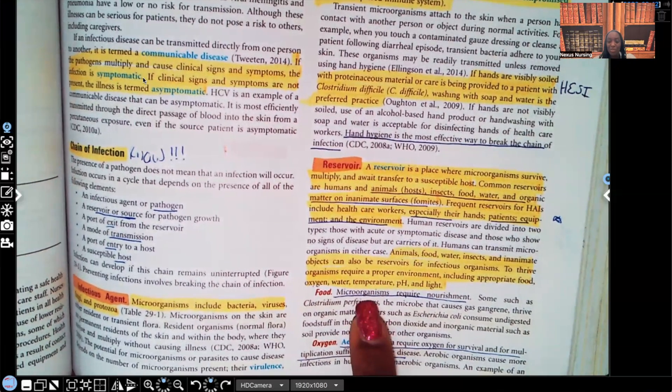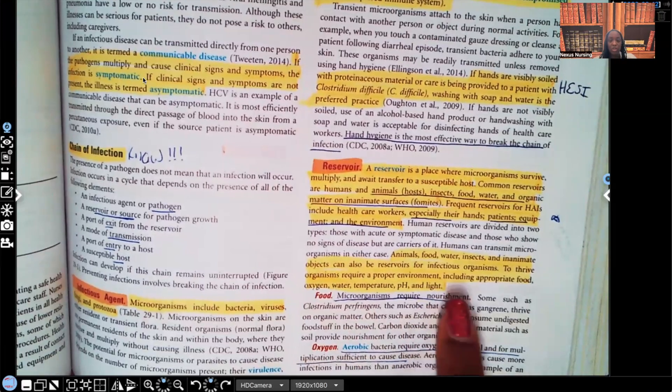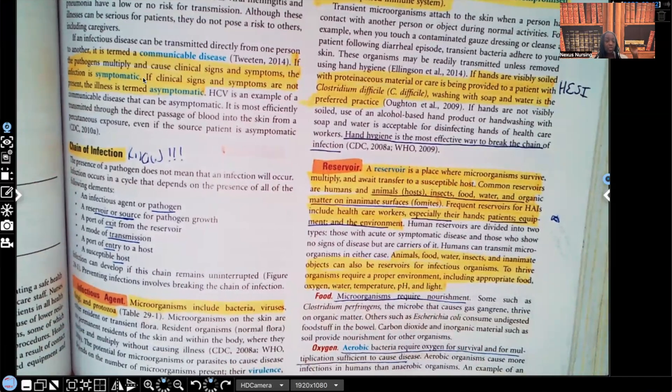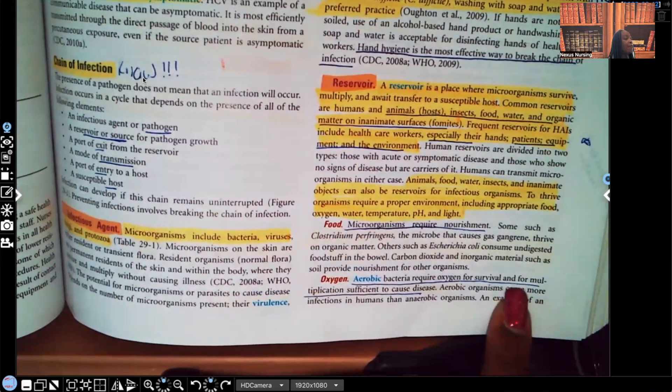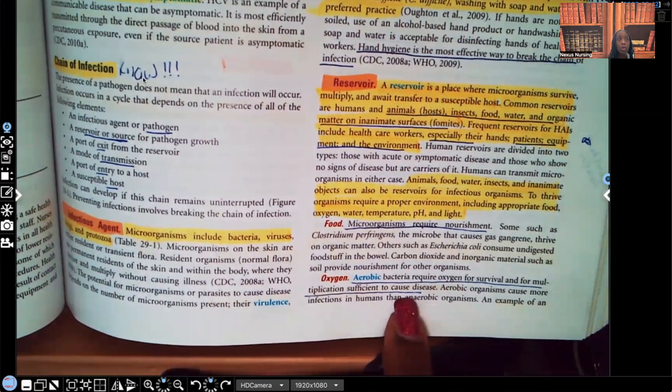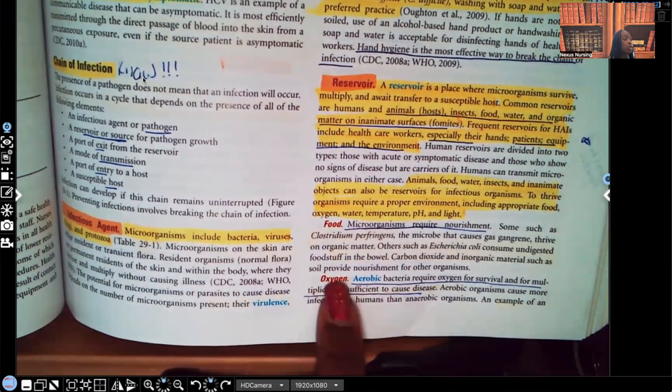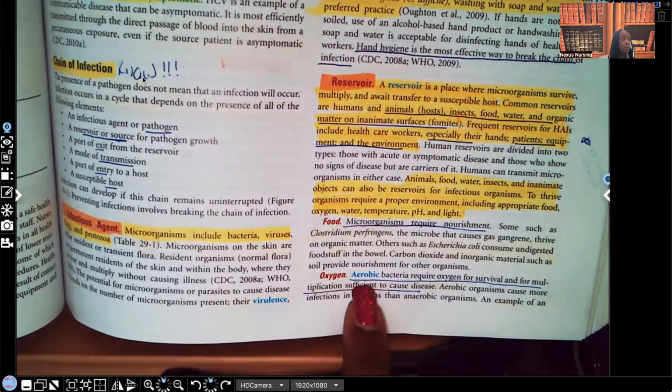Microorganisms need nourishment. I'm not going to read the rest of this. This is the most important thing you need to know. They need nourishment in order to survive. Oxygen. Now there's aerobic and anaerobic. Let's start with the aerobic. Look what it says. It says aerobic bacteria require oxygen for survival and for multiplication sufficient to cause disease. In order for them not only to survive, but to multiply and grow to cause disease, they need oxygen. So when you see aerobic, you need to be thinking of oxygen. They need oxygen to survive.